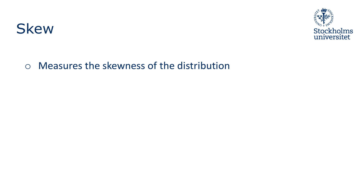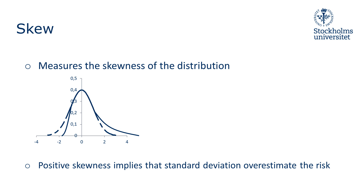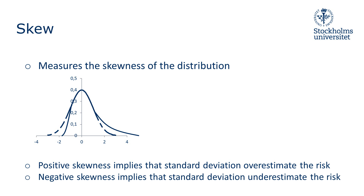Skew is a measure of the distribution's skewness. A positive skew means that the right tail is longer than the left tail, and vice versa for a negative skew. A positive skew implies that the standard deviation overestimates the risk, since large positive deviations are more common than large negative deviations. A negative skew instead implies that the standard deviation underestimates the risk, since large negative deviations are more common than large positive ones.